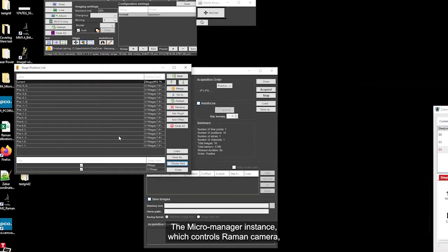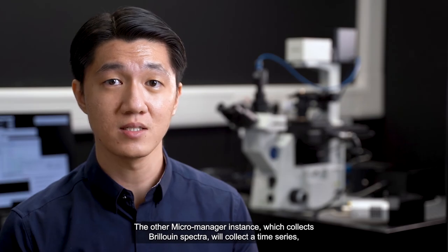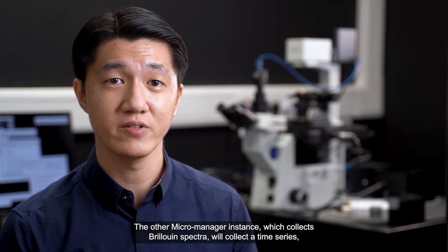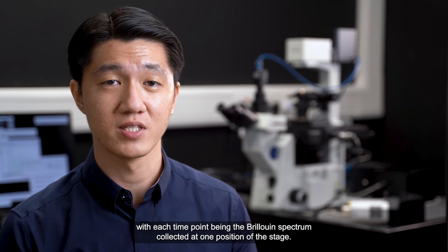The MicroManager instance which controls the Raman camera will control the stage and do the raster scanning. The other MicroManager instance, which controls Brillouin spectra, will collect a time series with each point being the Brillouin spectrum collected at one position of the stage.